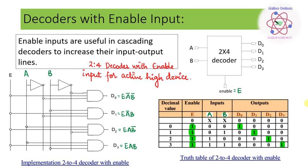The logic circuit is also shown, which shows E is equal to 1. The expressions for d0, d1, d2, and d3 each consist of the enable input pin, which is equal to 1.